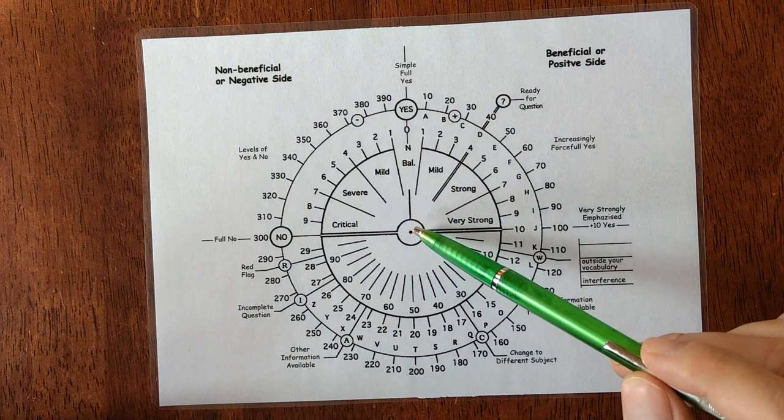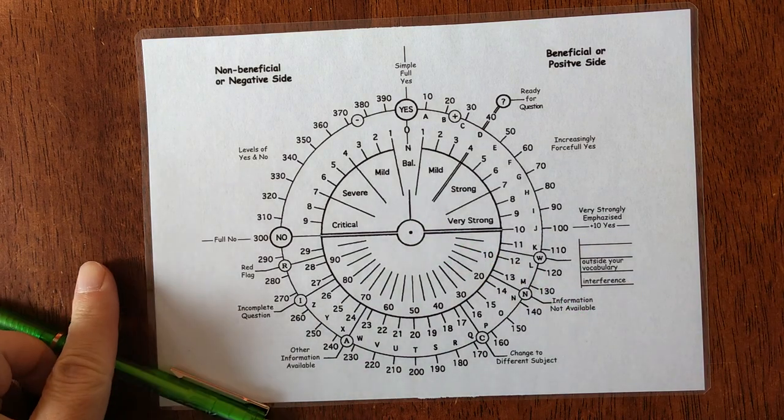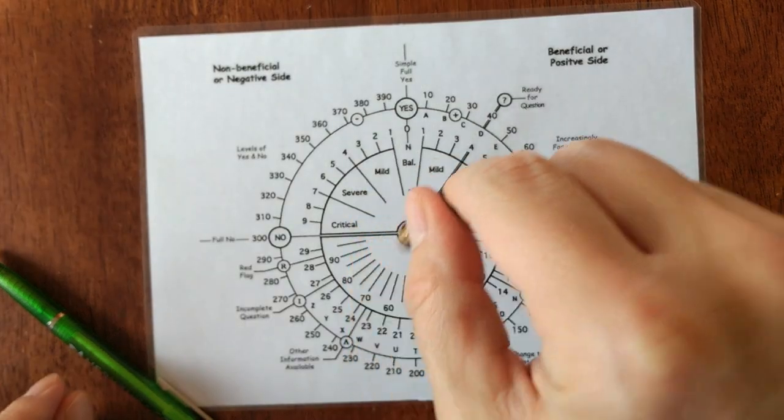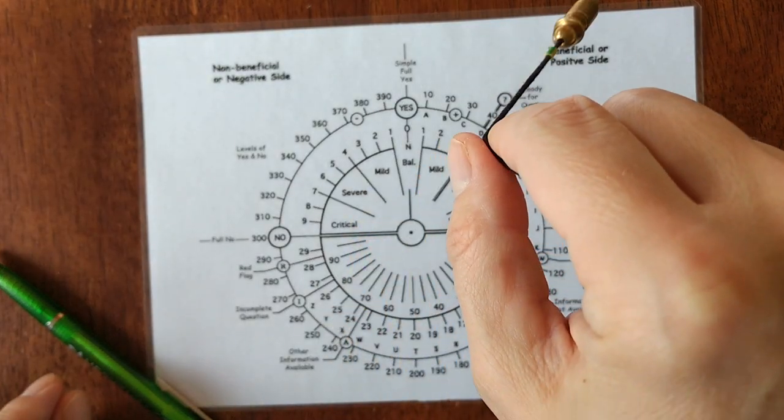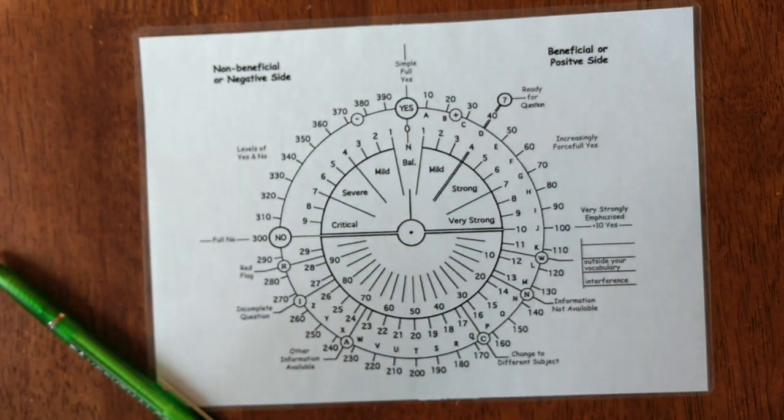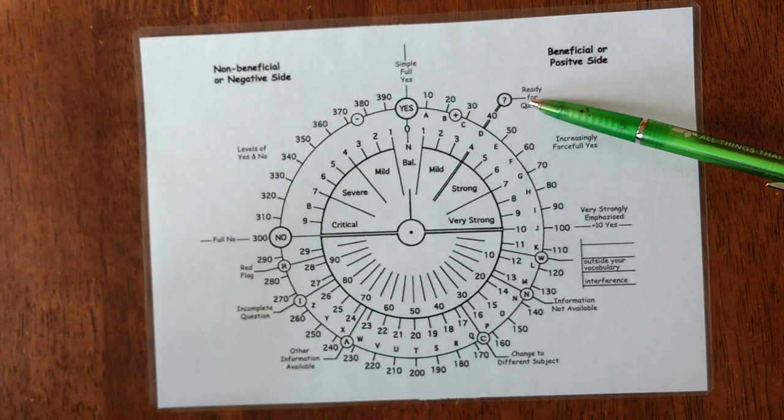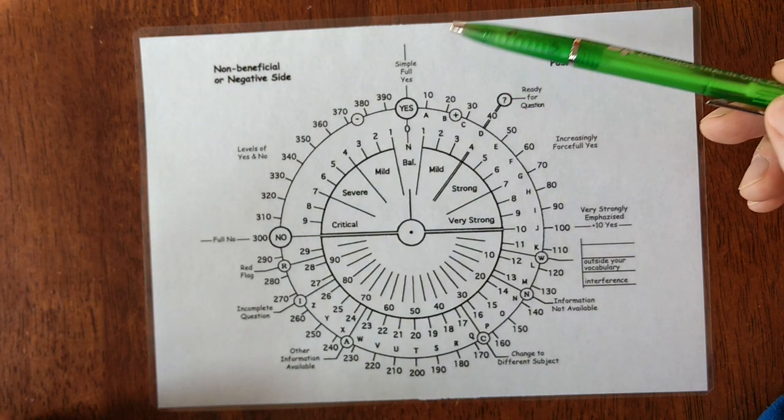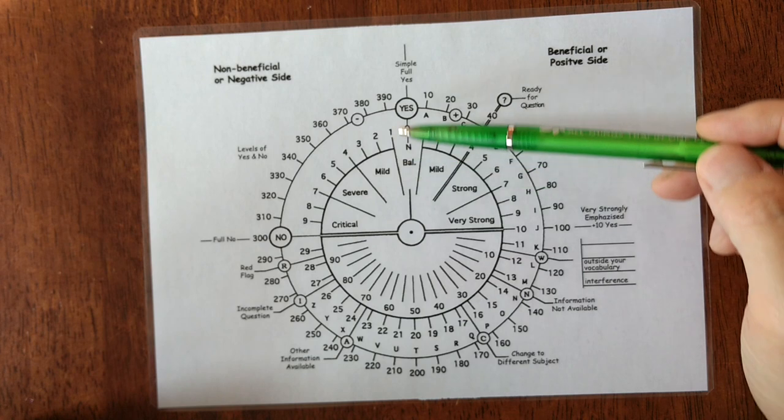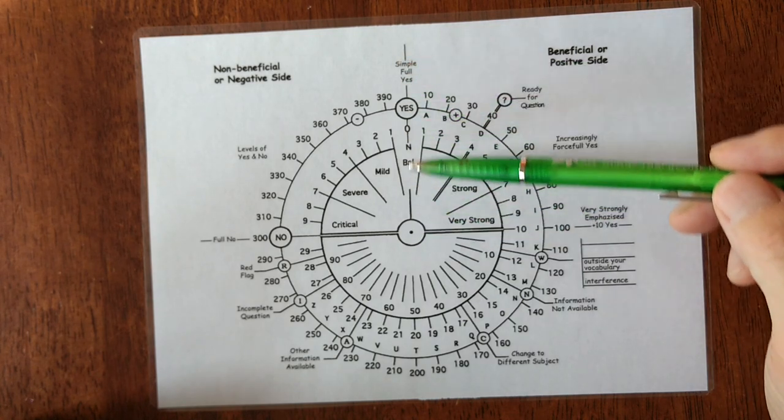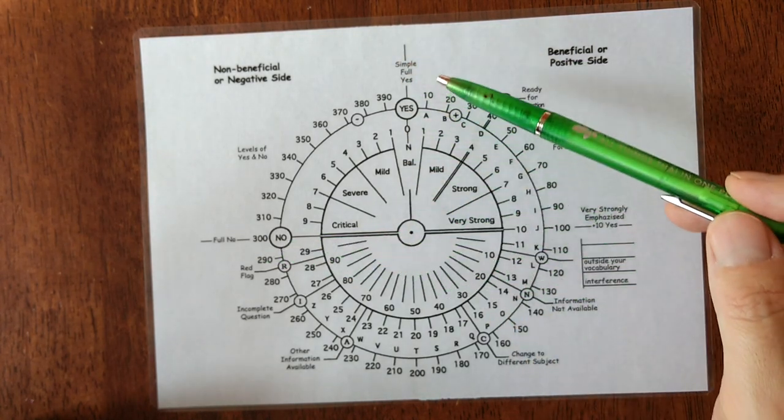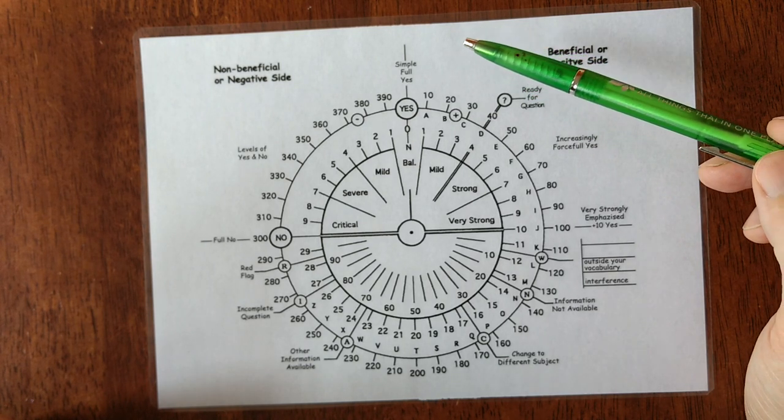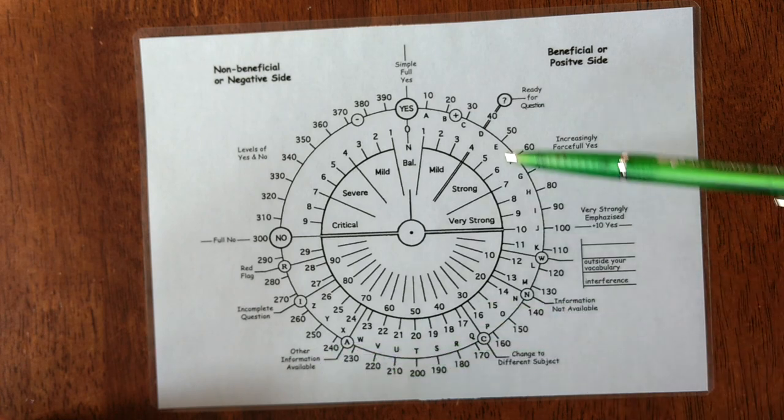Okay, so let me show you how easy this dowsing chart is to use. To start with, the pendulum hanging on the center, above the center of the chart like this, and towards the ready for question point here. And then when you dowse, the pendulum can simply say yes, it will be oscillating here, or no.